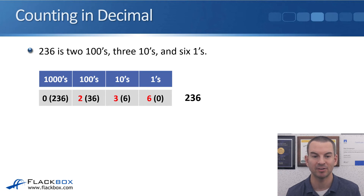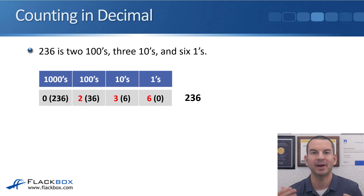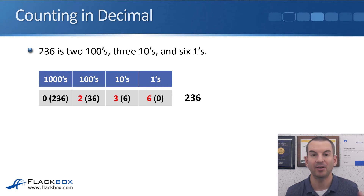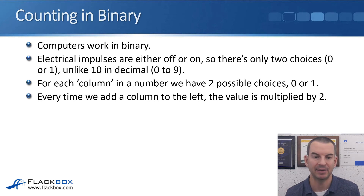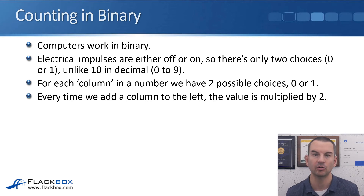Now, like I said at the start of this lecture, that's completely obvious and intuitive to you, so you're maybe wondering why I'm breaking it down like that. Well, it's because binary is not obvious and intuitive, but it works the same way. Computers don't work in decimal — they work in binary. Electrical impulses are either off or on, so there's only two choices: a 0 or a 1, unlike the 10 choices we have in decimal, which is 0 through to 9.